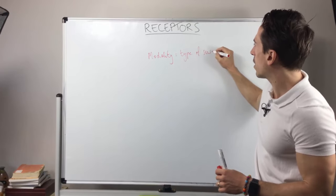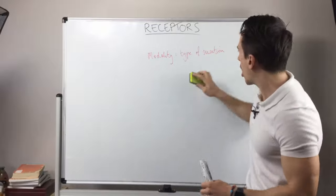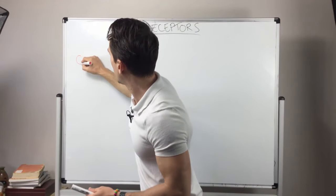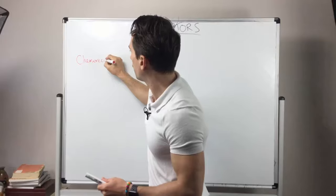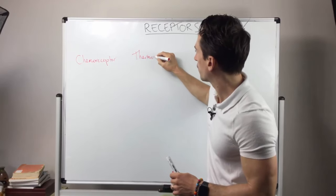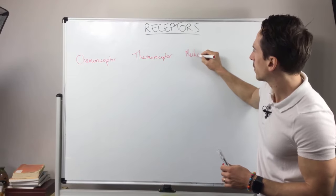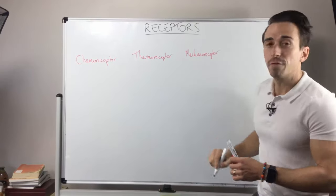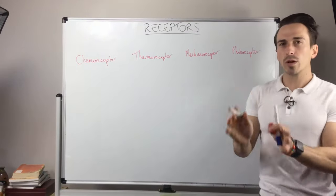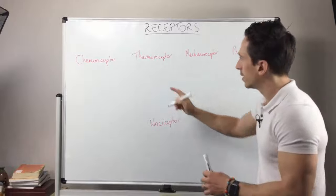There's five modalities of sensory receptors I want to look at today and I think this is the best way of classifying sensory receptors. First one is chemoreceptor, next one is thermoreceptor, next one is mechanoreceptor, then photoreceptor, and then the last one is nociceptor. I'm writing it down here not because there's no room but it's a little bit different to these four at the top.